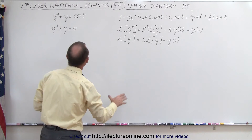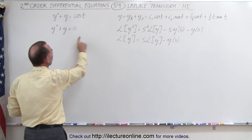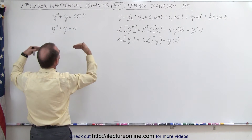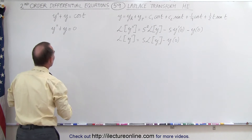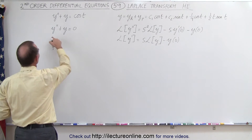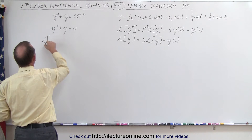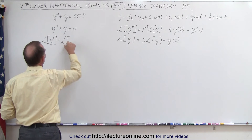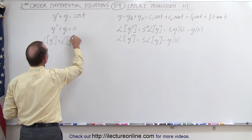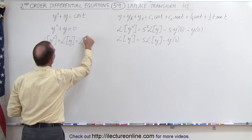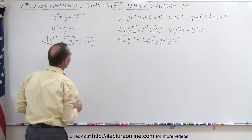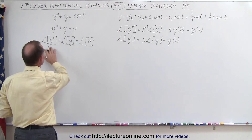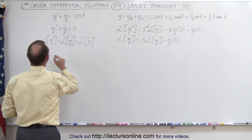What we're going to do is plug in the expressions for y double prime and y when we take the Laplace transform of both sides of the equation. So we're going to take the Laplace transform of y double prime, add that to the Laplace transform of y, and that's going to equal the Laplace transform of zero. Of course, the Laplace transform of zero is simply zero.